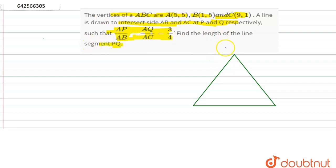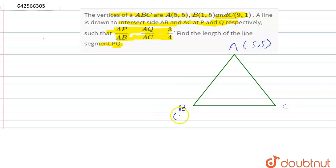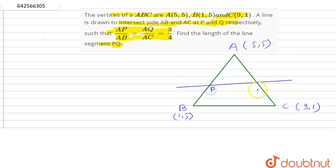Suppose this is our triangle A, B and C. The coordinate of A given in the question is (5,5), the coordinate of B is (1,5), and the coordinate of C is (9,1). This is a line where P and Q are the coordinates.